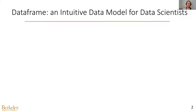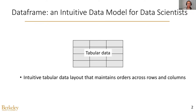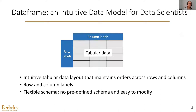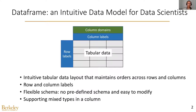DataFrame is an intuitive data model for data scientists, where the data is organized in a tabular layout and ordered across rows and columns. It includes row and column labels to identify a cell and does not require a predefined schema. This way, a data scientist can quickly explore their data even when the schema is not determined. In addition, each column can host data with mixed types, which is a critical feature for data scientists to quickly analyze dirty datasets.